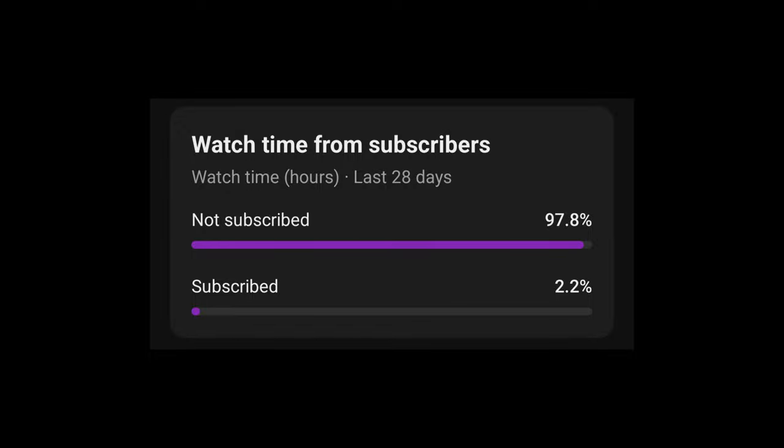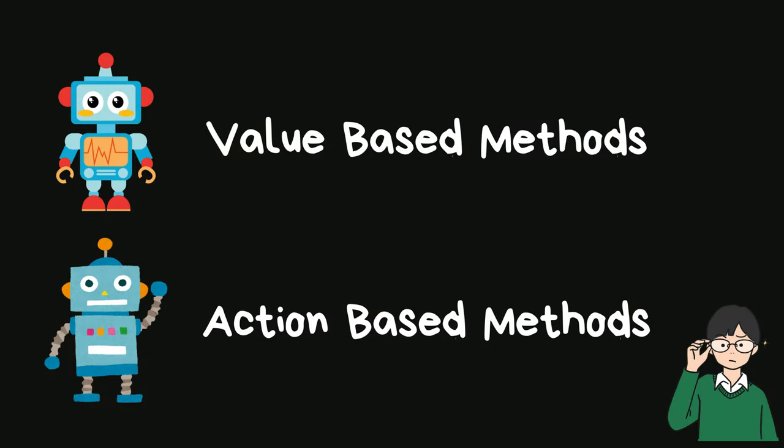Alright, with that out of the way, let's begin. In reinforcement learning there are two major ways to train your agent: value-based methods and action-based methods.